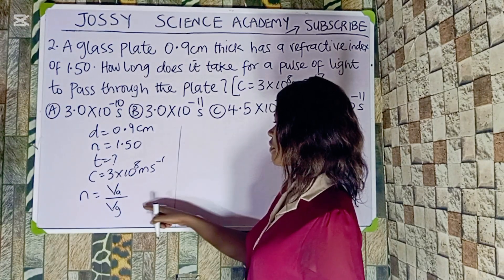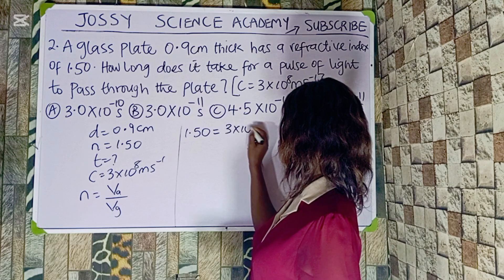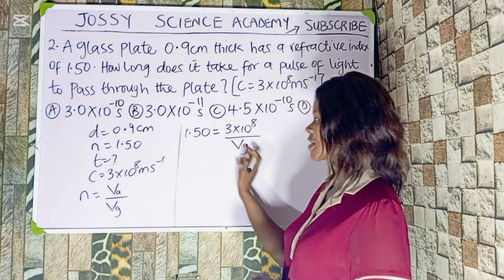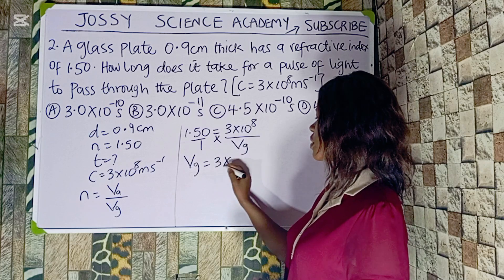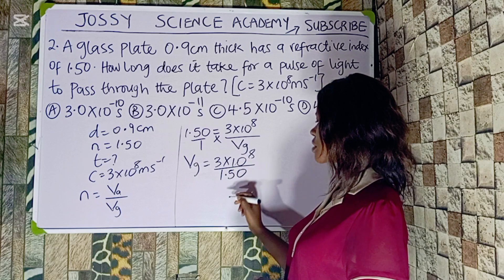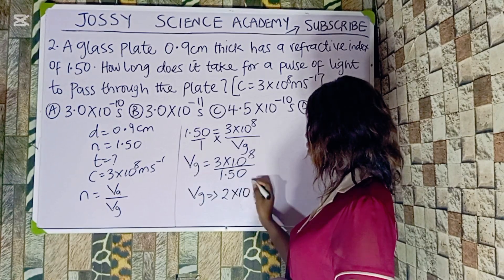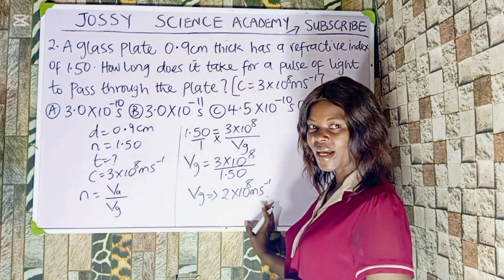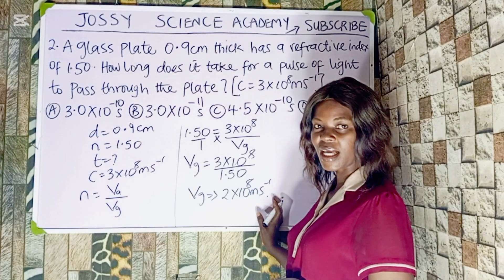So: 1.50 = 3×10⁸ divided by the velocity in the second medium, which is glass. Cross-multiplying, Vg = 3×10⁸ divided by 1.50, which gives us 2×10⁸ m/s. That is the velocity of light in the second medium, which is glass.